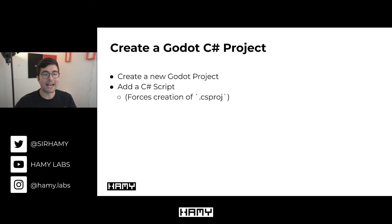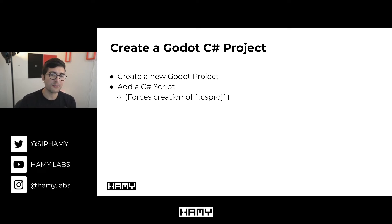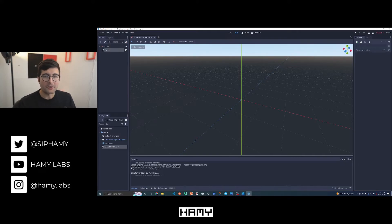The first thing we need to do is actually create a Godot C-sharp project. First, we're going to create our Godot project. Then the second thing we're going to do is add a C-sharp script to it. What this is going to do is force Godot to actually create a csproj, which we'll need later so we can actually reference our F-sharp project. Here's a simple Godot project I just created — basically it's just the base scene. I've chosen the 3D setup so there's a spatial, and then I've just added a node here.